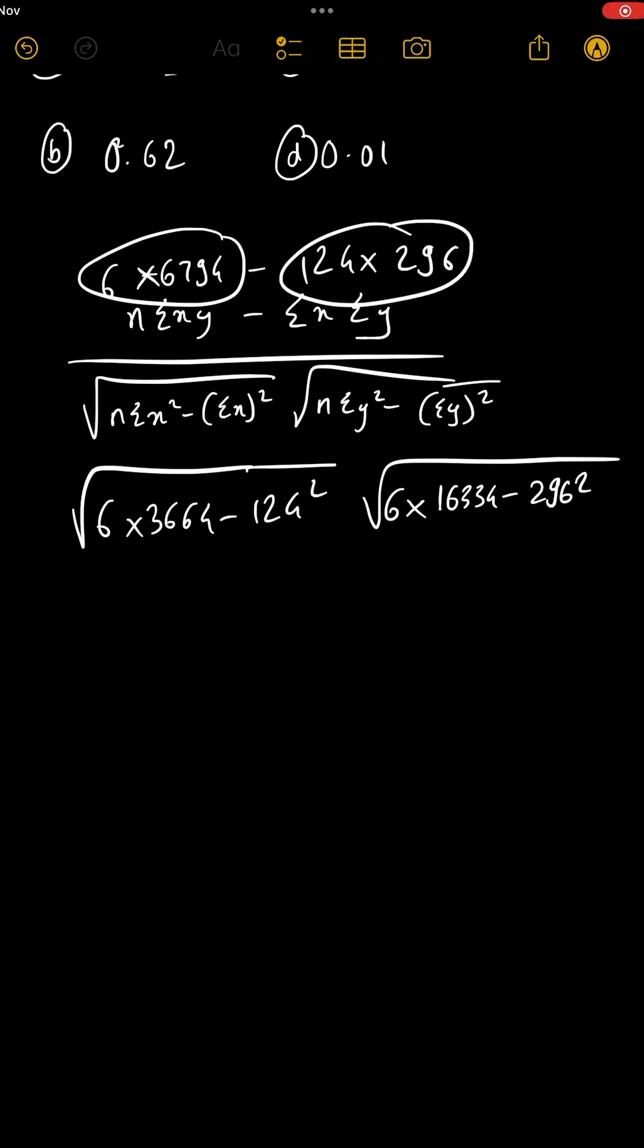When you press MRC we get 4060 upon square root of, now 6 into 3664 m plus, 124 square m minus, so that is 6608, into square root of 6 into 16334 m plus, 296 square m minus, so that is square root of 10388.